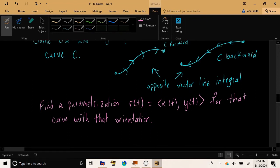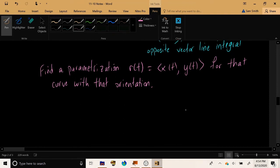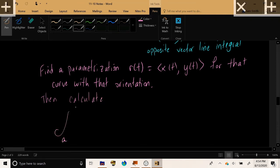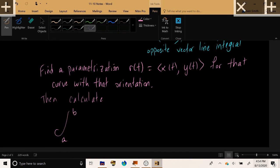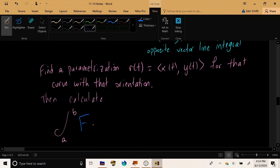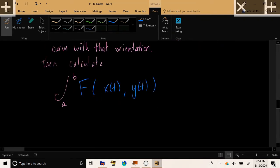Now, once we have the parameterization for the curve C with the specified orientation, then we want to calculate the following. Calculate from the beginning of the parameterization to the end of the parameterization the following dot product. Not capital F of x, but capital F of the x of the parameterization. Capital F of the y of the parameterization. Now remember that the output of this function is a vector. And a vector can be dotted with another vector. So we are going to take the dot product of this force, of this vector output, with R'(t), the derivative of our parameterization. And we're going to integrate that with respect to t. It's a single variable integral.